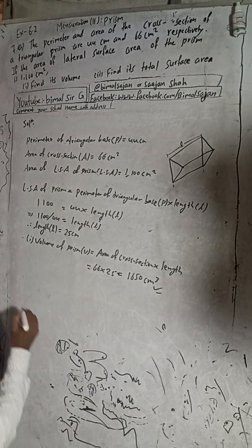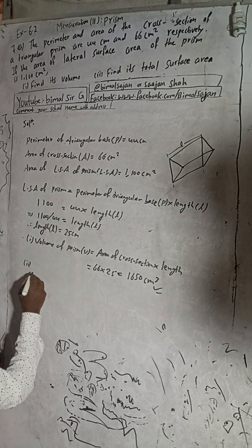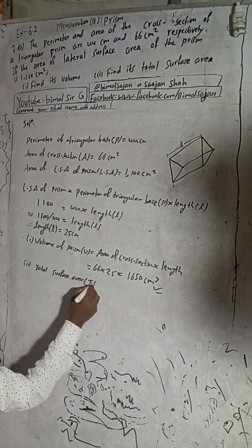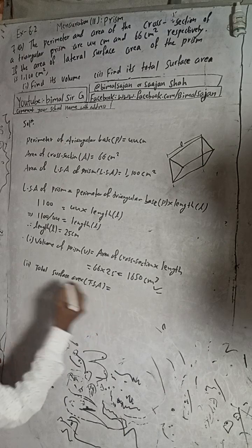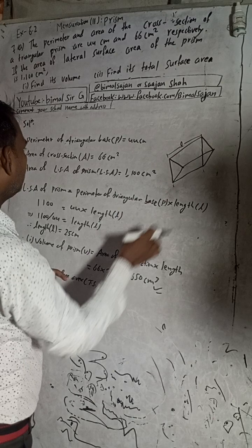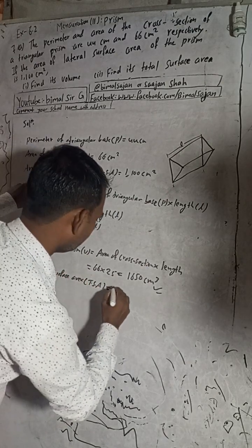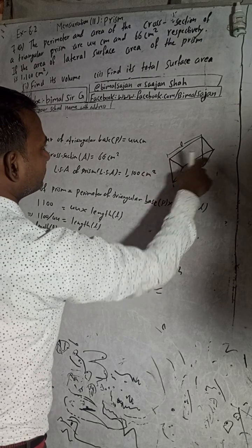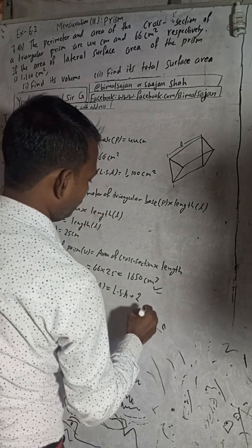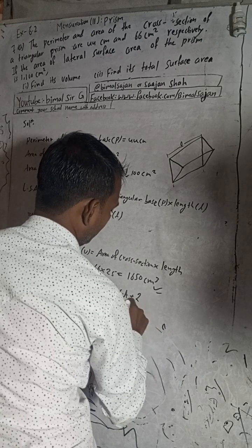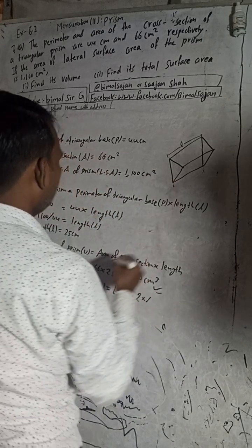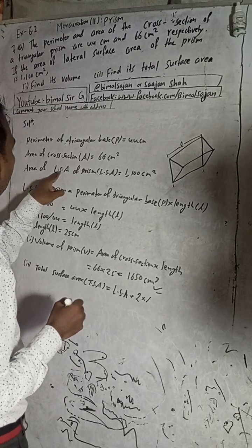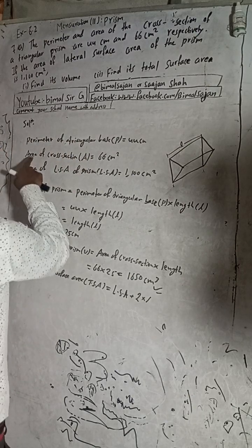Number two: Total surface area. The total surface area of the prism equals the lateral surface area plus two times the area of the triangular base. That is: TSA = lateral surface area + 2 × area of cross-section. The area of the triangular base is the same as the area of the cross-section, which is 66 cm².